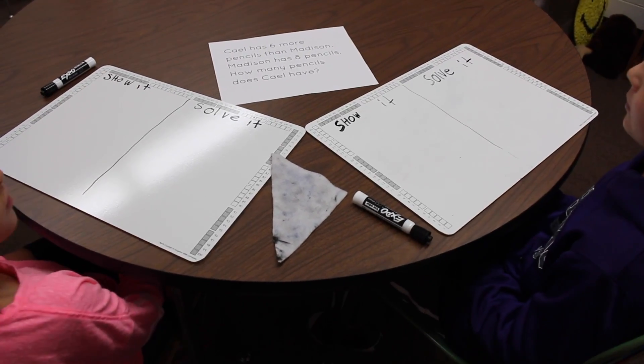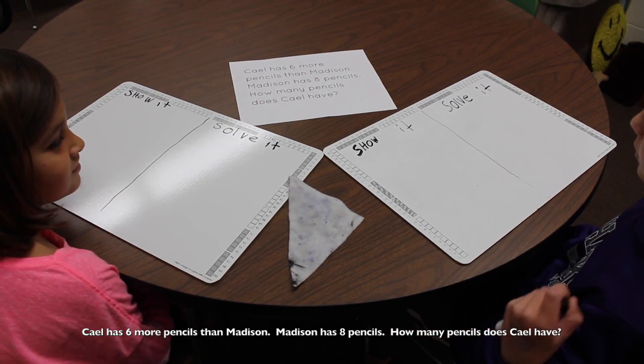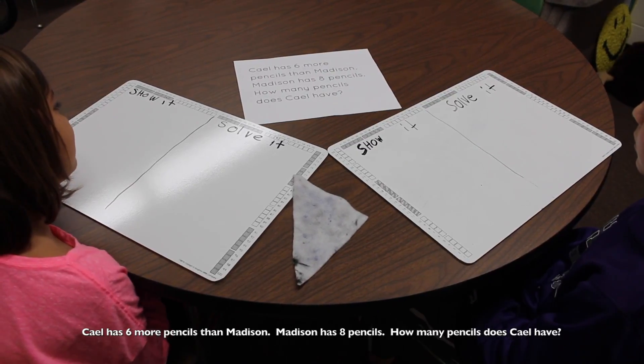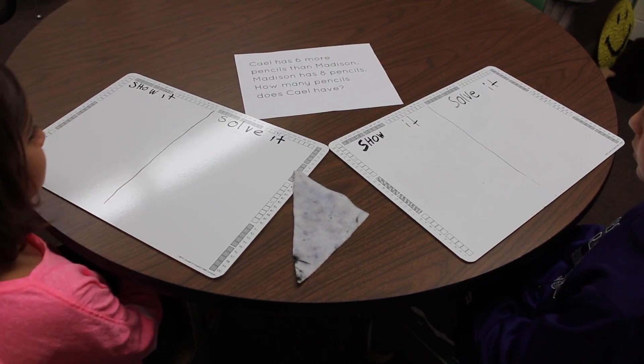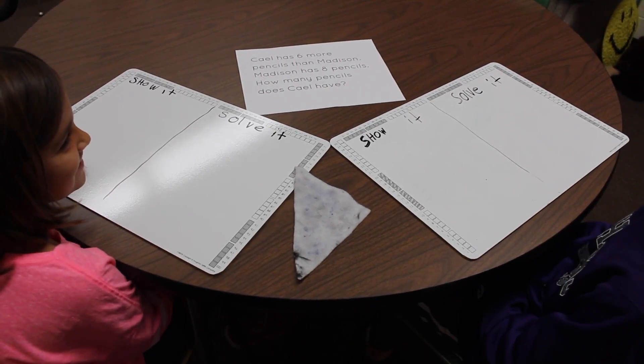Okay, so let's work on this problem. It says Cal has six more pencils than Madison. Madison has eight pencils. How many pencils does Cal have? Madison, who is in this story? Cal and Madison. Cal, what is this story about? It's about how many pencils does Cal have more than Madison.